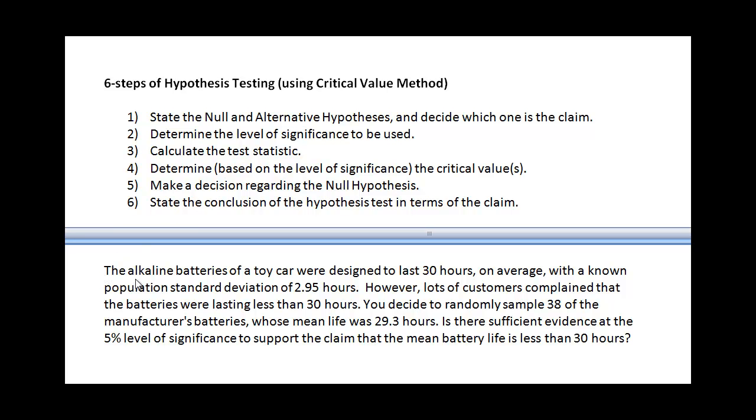Take a look at this. The alkaline batteries of a toy car were designed to last 30 hours on average, and we know the population standard deviation is 2.95 hours. A lot of customers were complaining because the batteries they were using were lasting less than 30 hours. So you decide to randomly sample 38 of those batteries, and you found that they had a mean life of 29.3 hours. The question is, is there sufficient evidence at the 5% level of significance to support the claim that the mean battery life is actually less than 30 hours?